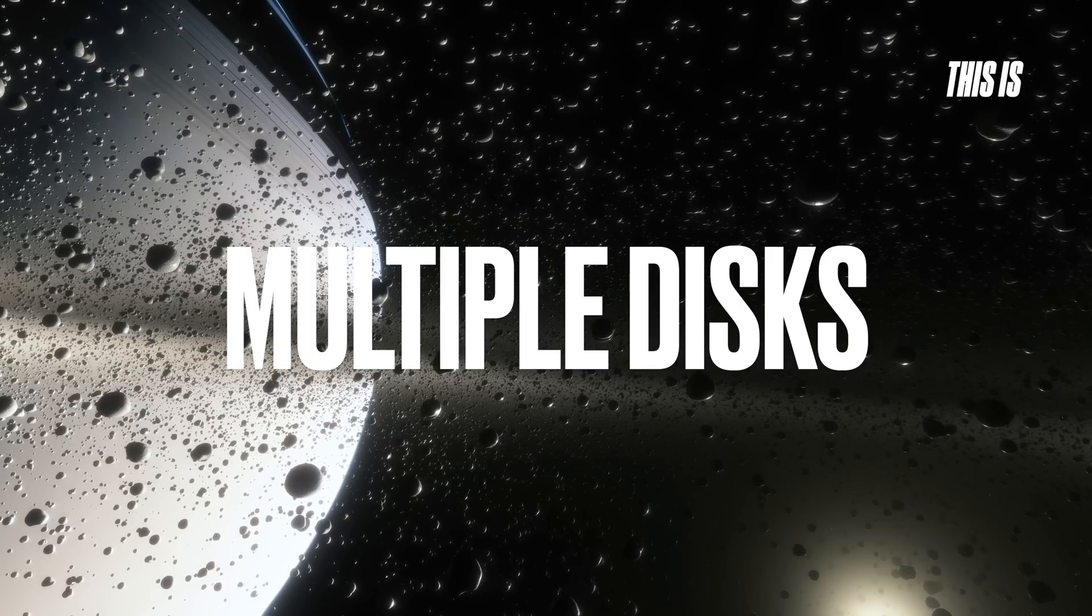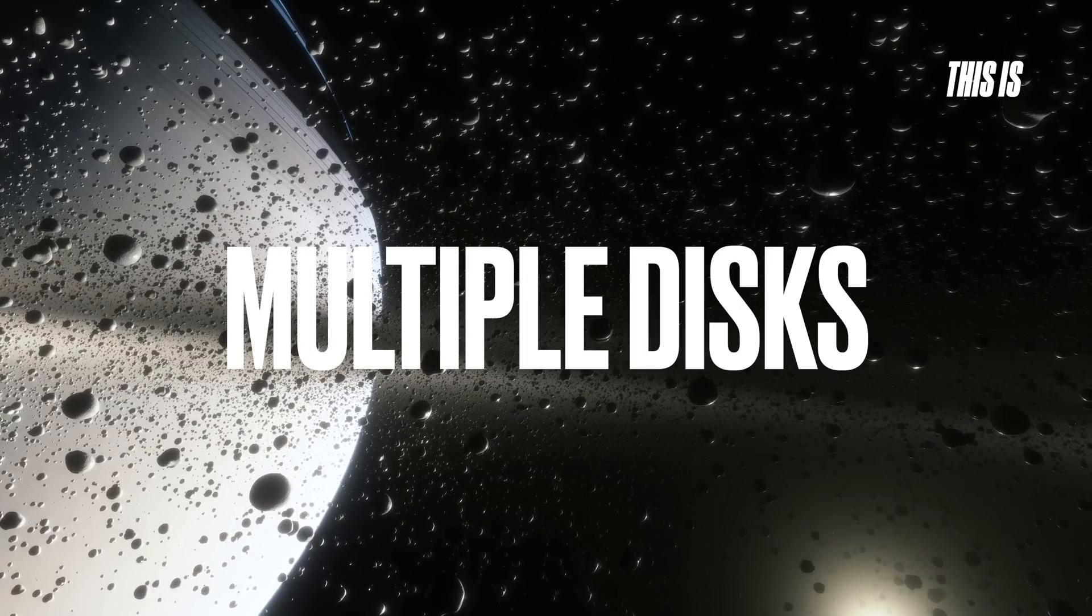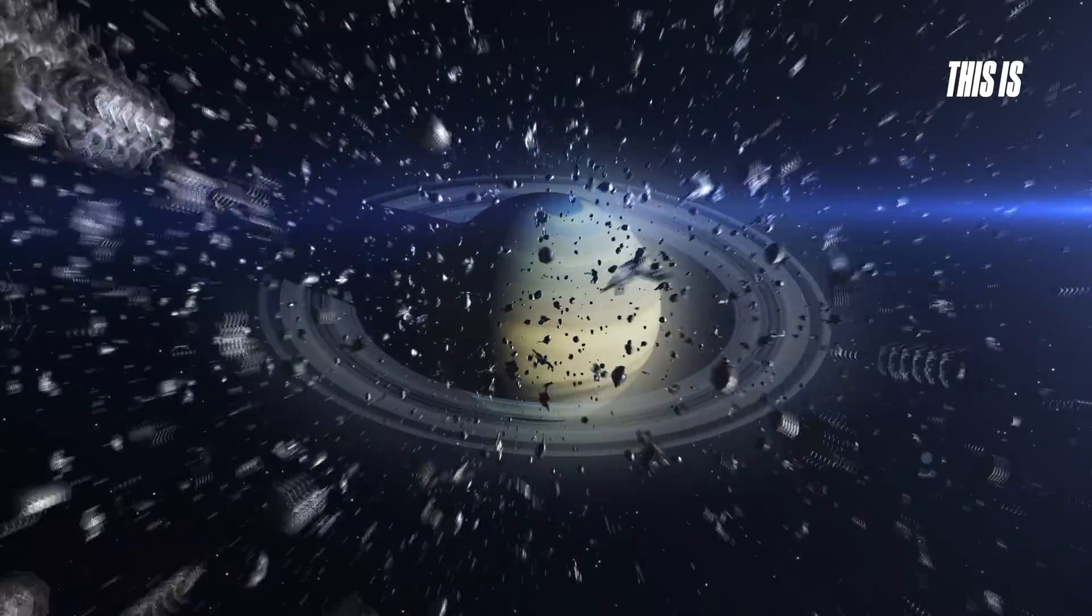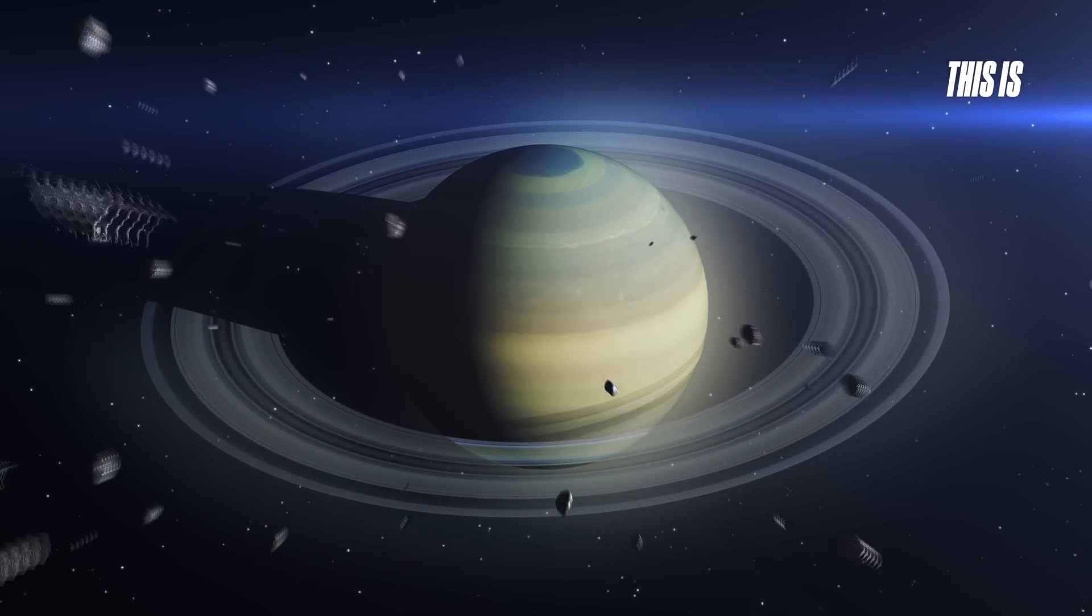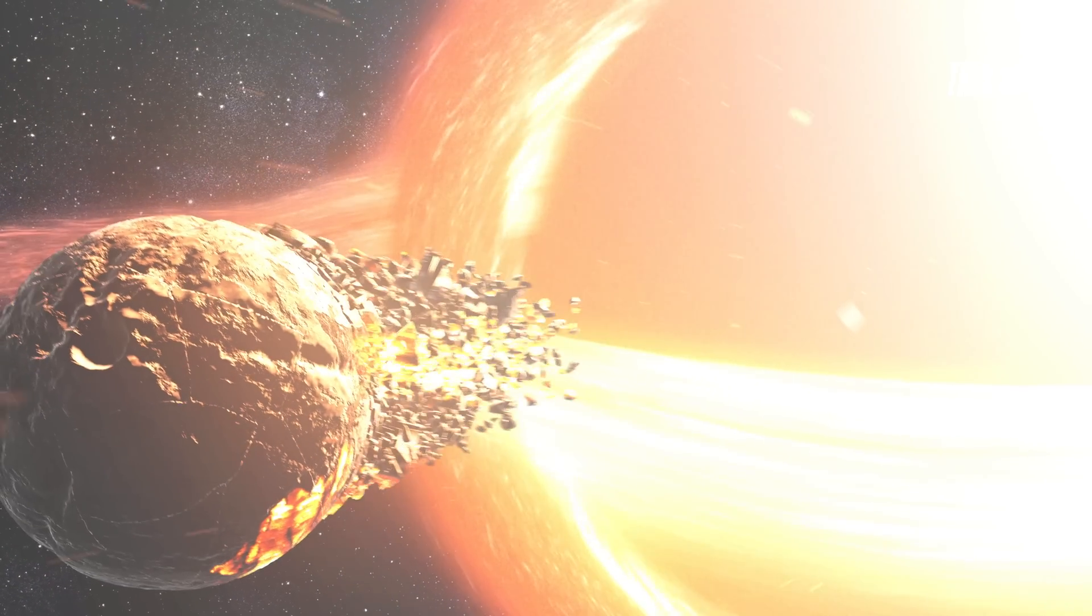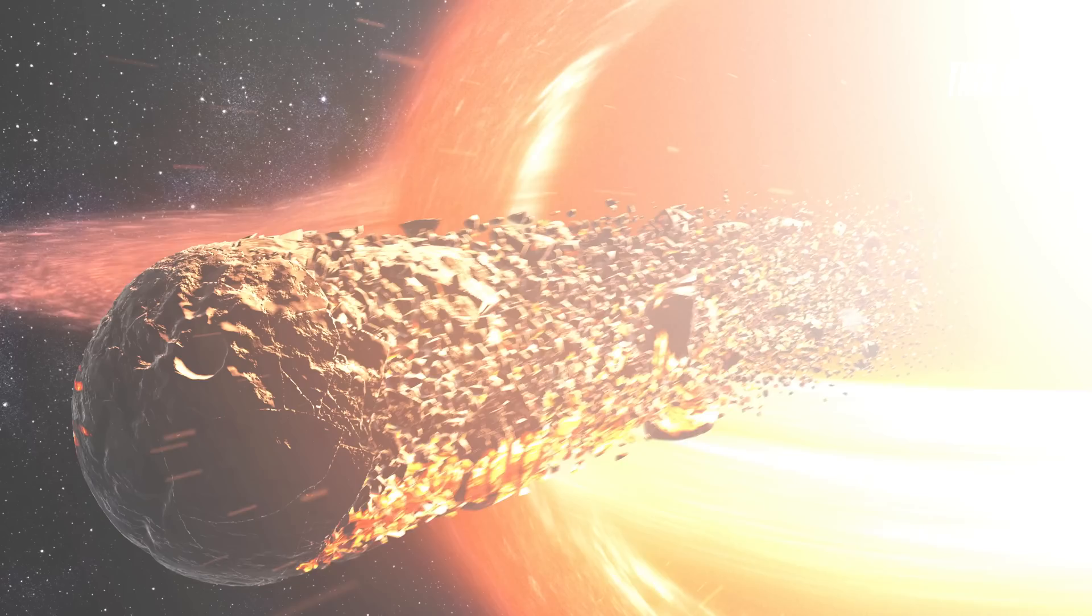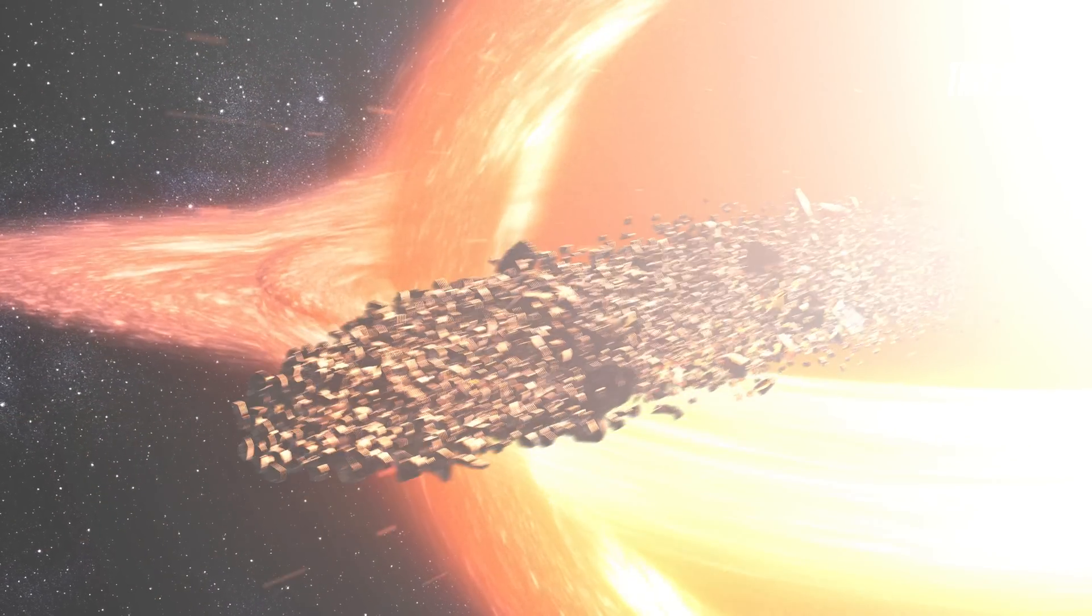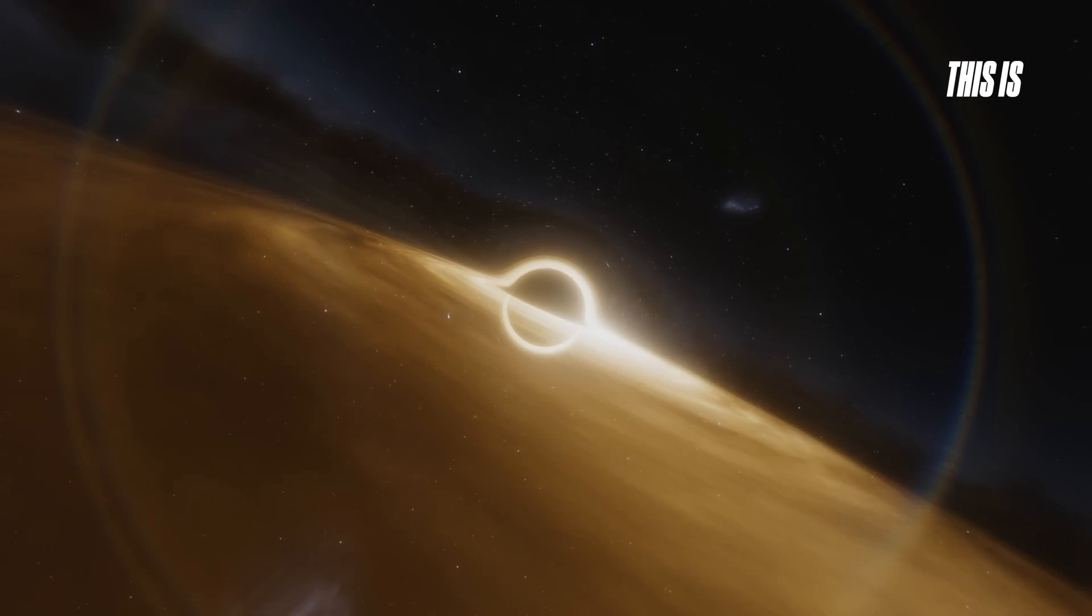In extreme cases, a black hole might have multiple layers within its accretion disk. However, this does not mean separate disks like Saturn's rings. Some supermassive black holes can have complex disk structures, due to intense radiation and turbulence, where matter accumulates in both inner and outer regions, yet still remains part of a single connected system.